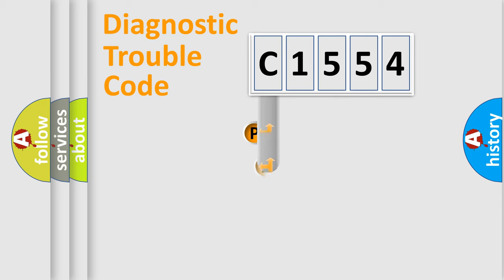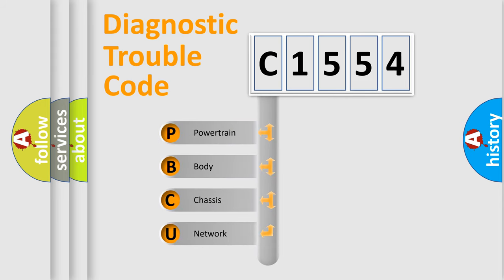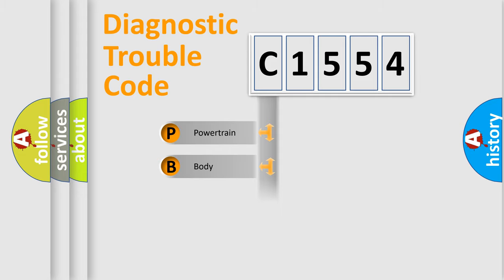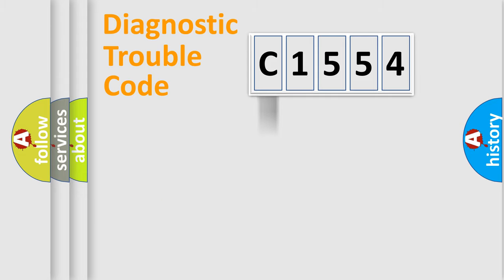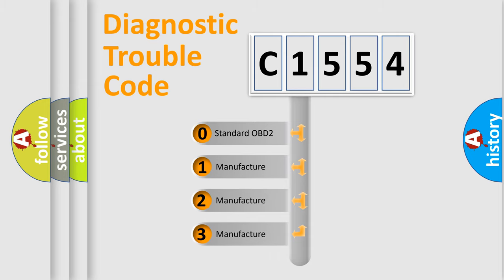Let's look at the history of diagnostic fault code composition according to the OBD2 protocol, which is unified for all automakers since 2000. We divide the electric system of automobile into four basic units: Powertrain, Body, Chassis, and Network. This distribution is defined in the first character of the code.